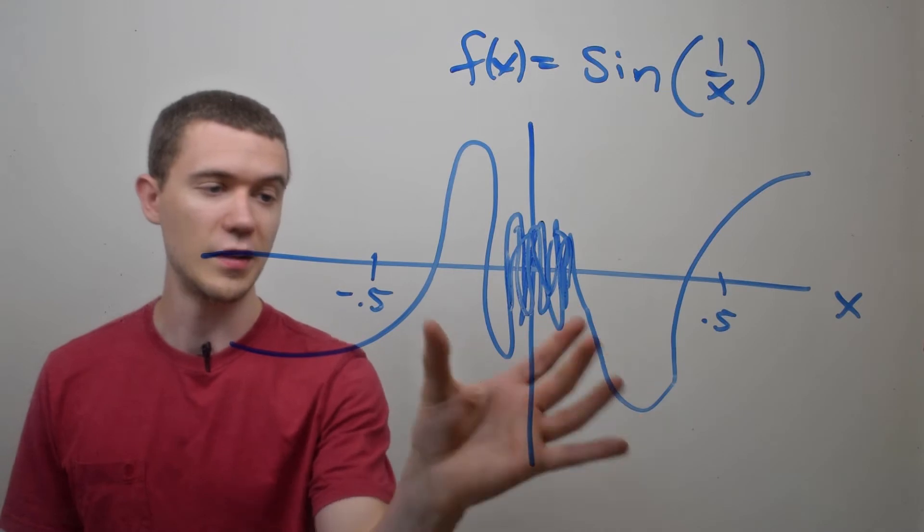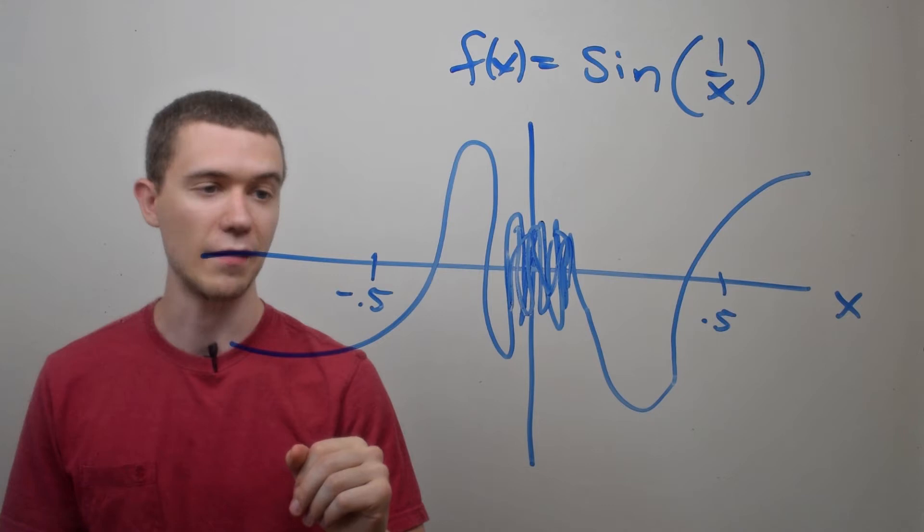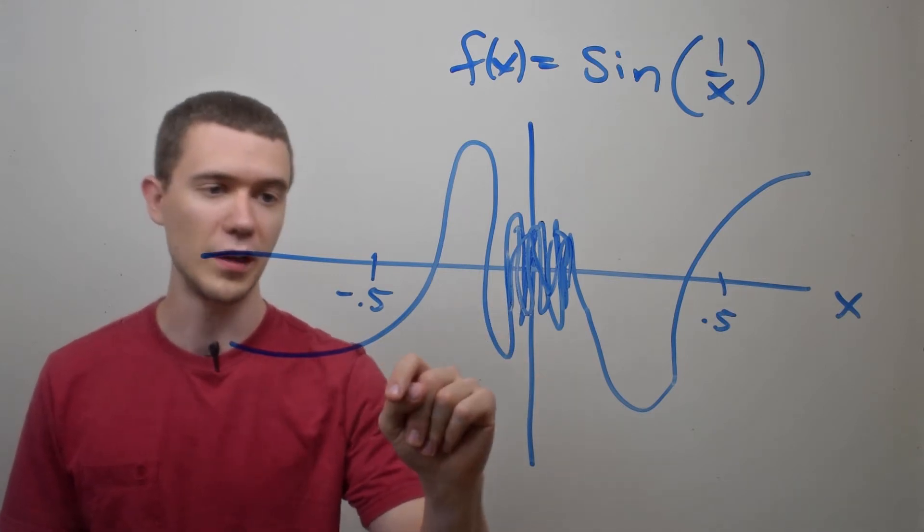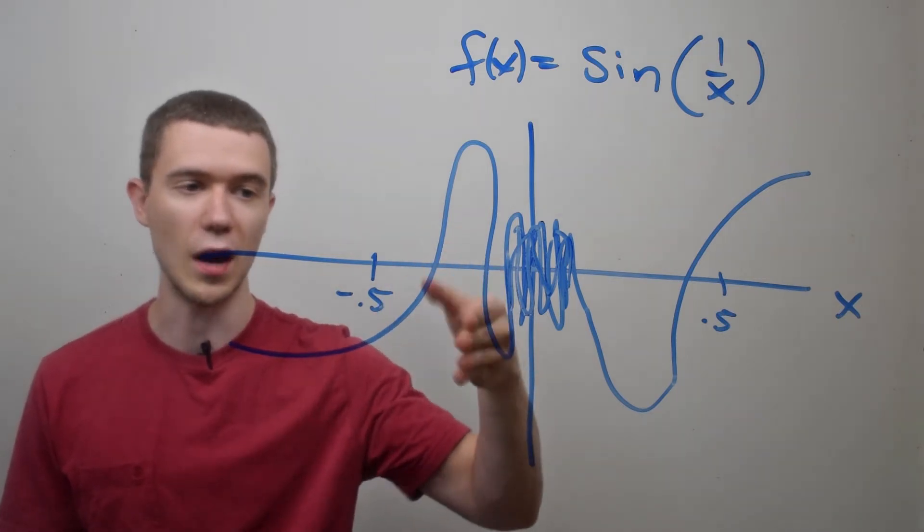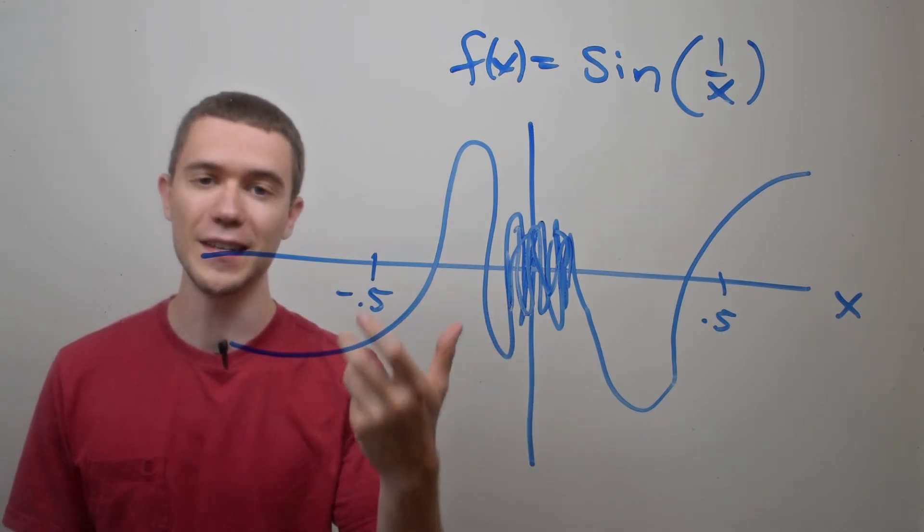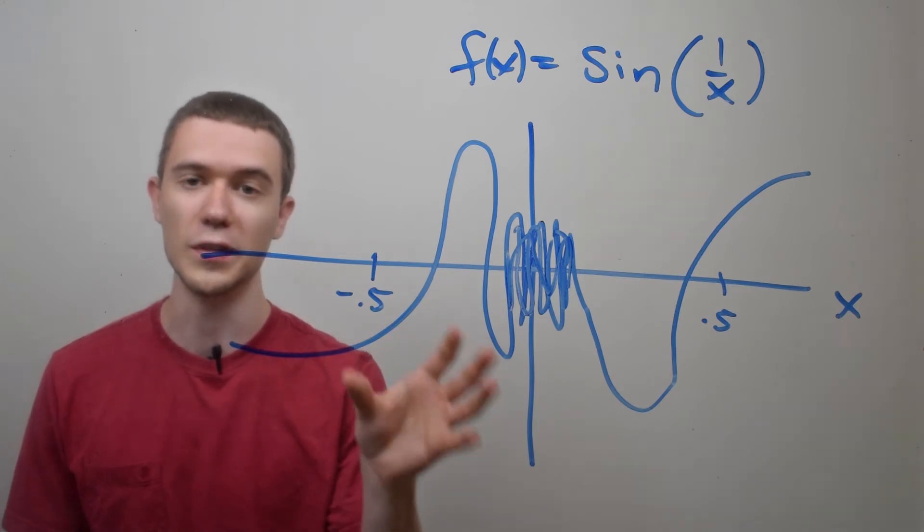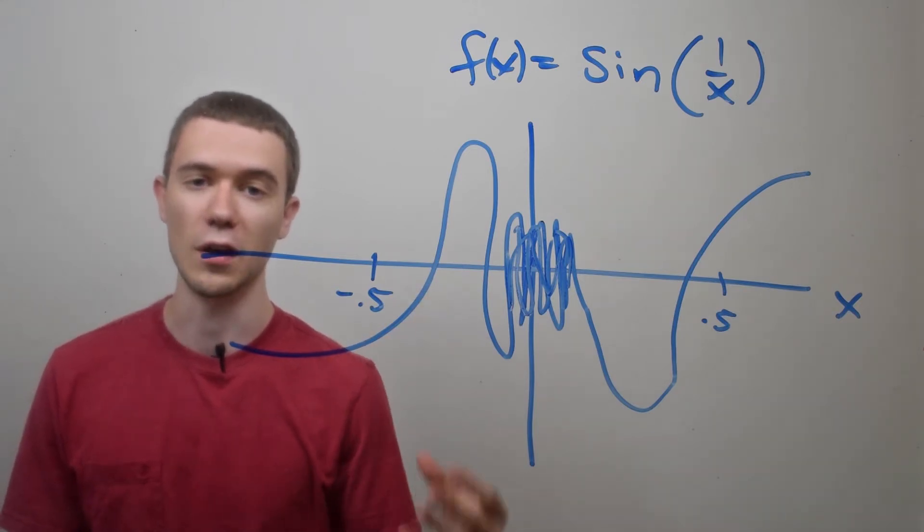So I've really narrowed in on this graph, and this is just the interval minus a half to a half, and you can see what happens in the middle here. It sort of does this rapid up and down motion, this rapid oscillation, and this is an example of an oscillating discontinuity. This is what a graphical representation of this type of discontinuity is.